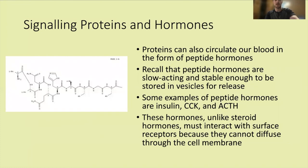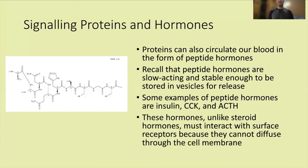Proteins also circulate in the blood as peptide hormones. Peptide hormones are slow acting and stable enough to be stored in vesicles for release. Examples include insulin, CCK — which is involved in digestion — and ACTH, which is involved in the HPA axis. Unlike steroid hormones, peptide hormones must interact with surface receptors because they can't diffuse through the cell membrane — peptides are polar and the cell membrane is hydrophobic.